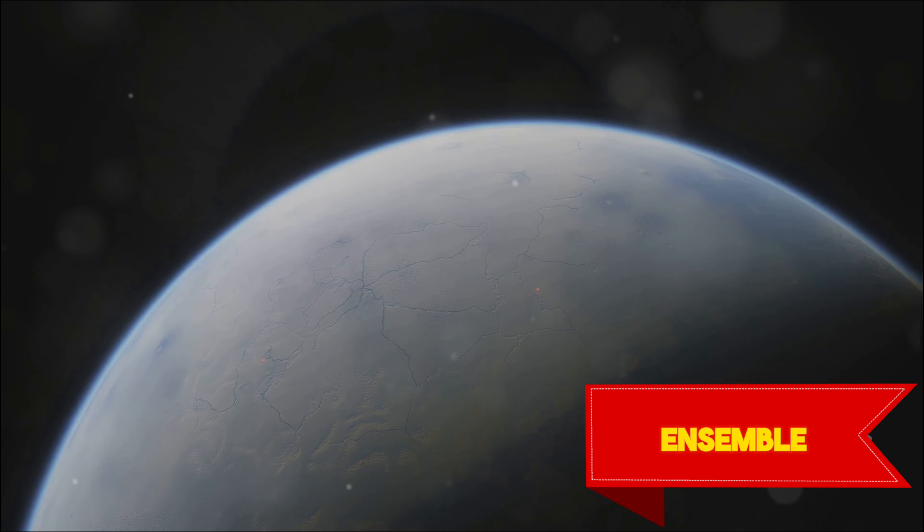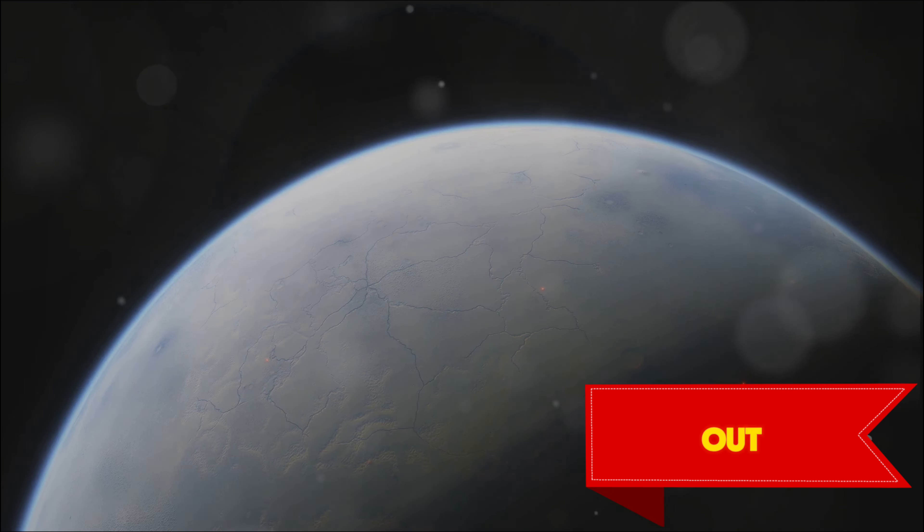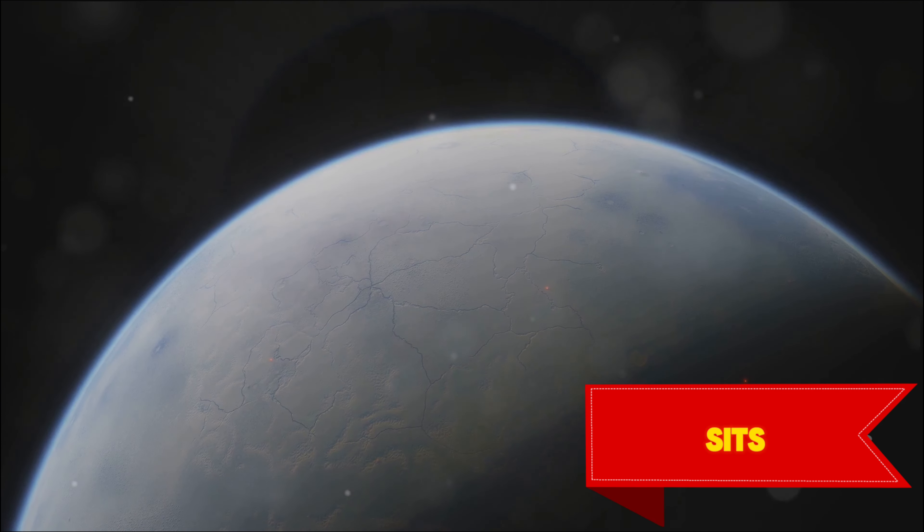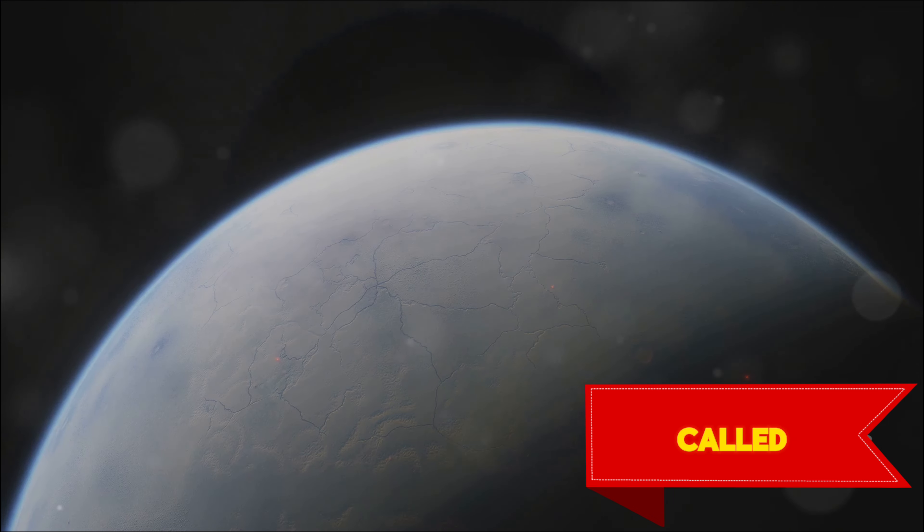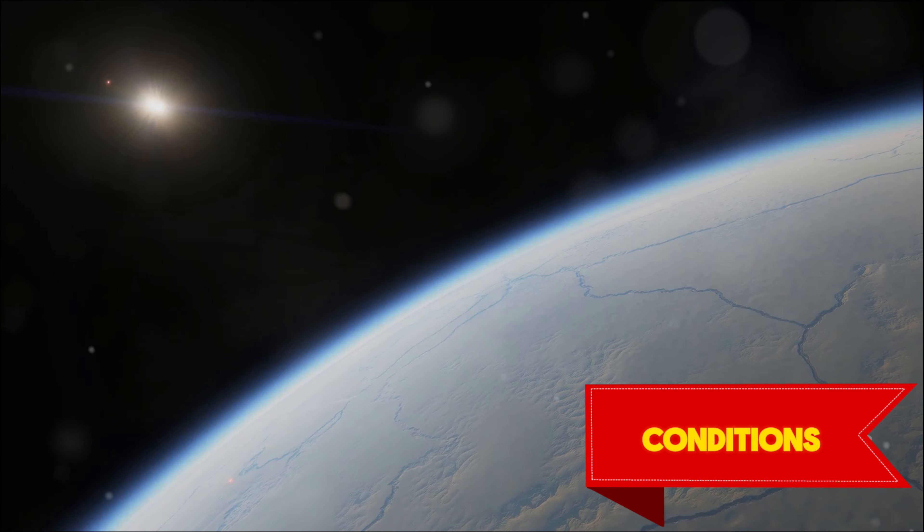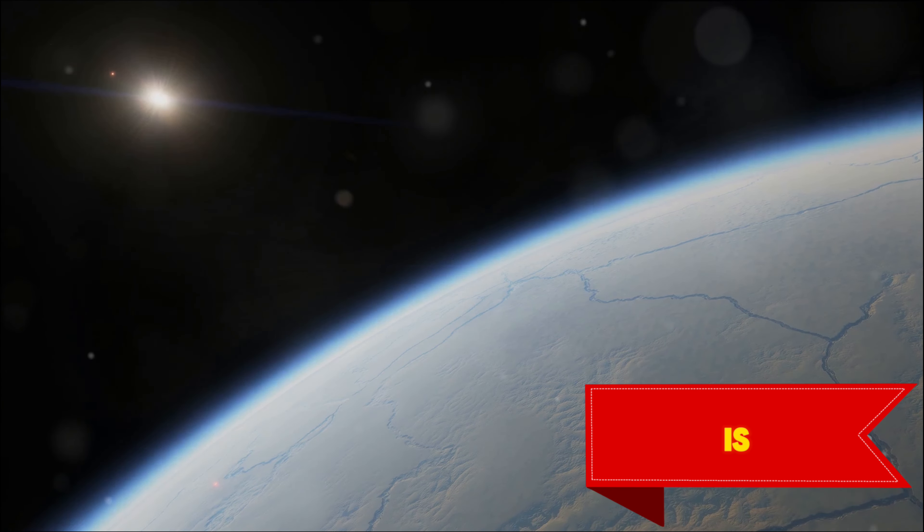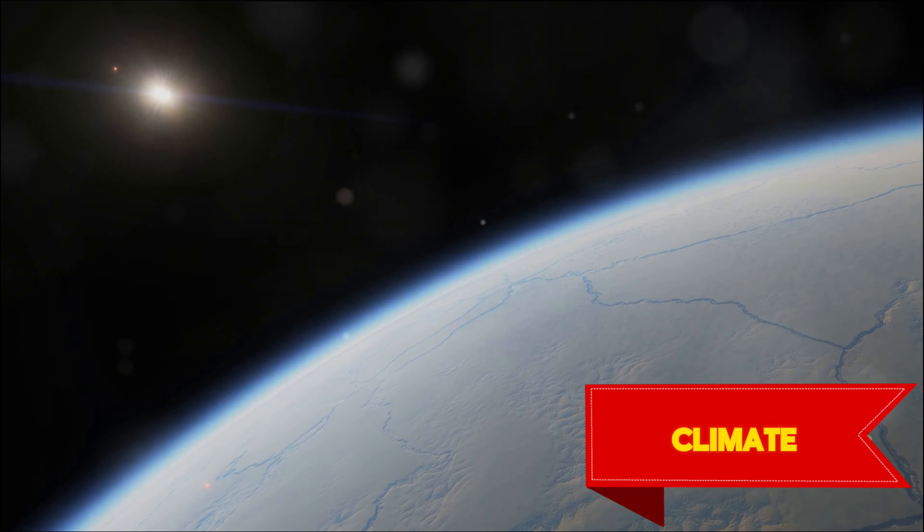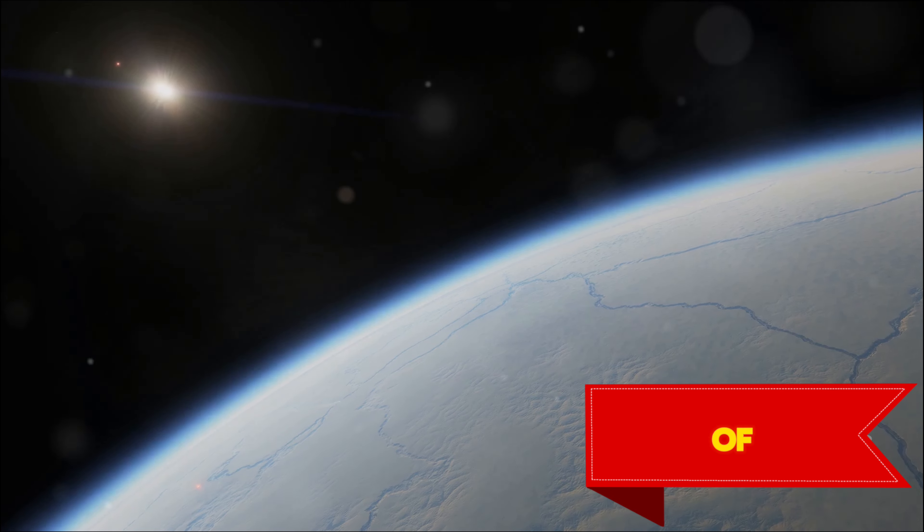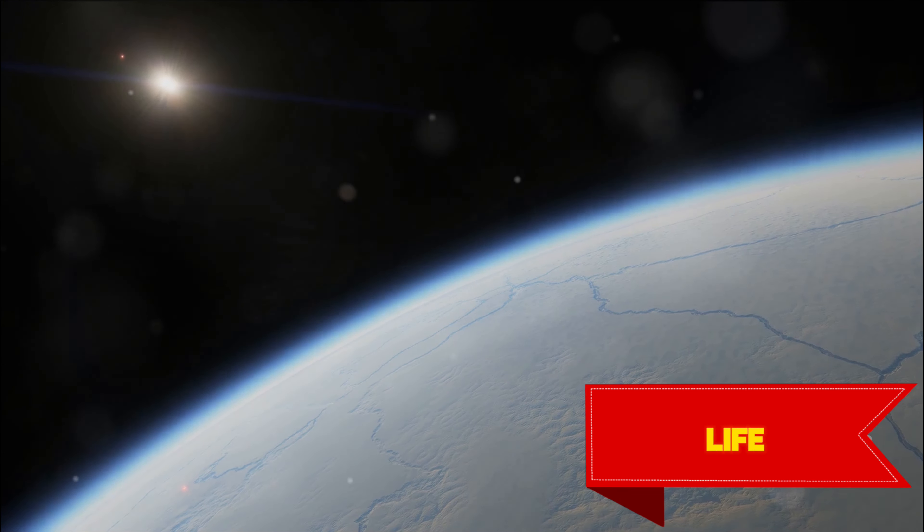In this celestial ensemble, TRAPPIST-1e stands out. It's roughly the same size as Earth and sits comfortably within the star's habitable zone, the so-called Goldilocks region, where conditions could be just right for life as we know it. This tantalizing world is believed to have an Earth-like climate, and there's even the possibility of liquid water on its surface, a key ingredient for life.